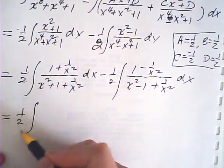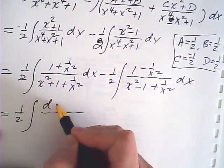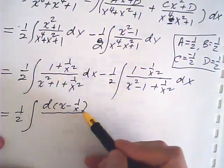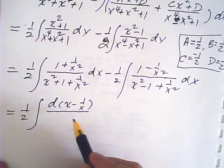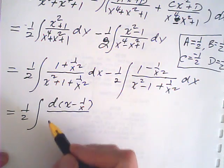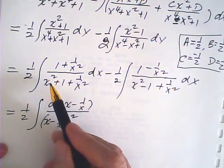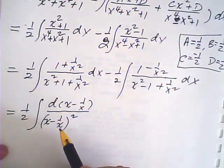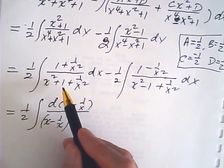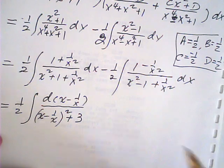For the first integral, the numerator (1 + 1/x²) is the derivative of (x − 1/x). We change the denominator in terms of (x − 1/x): (x − 1/x)² equals x² − 2 + 1/x², so we need to add 3 to complete it, giving (x − 1/x)² + 3.